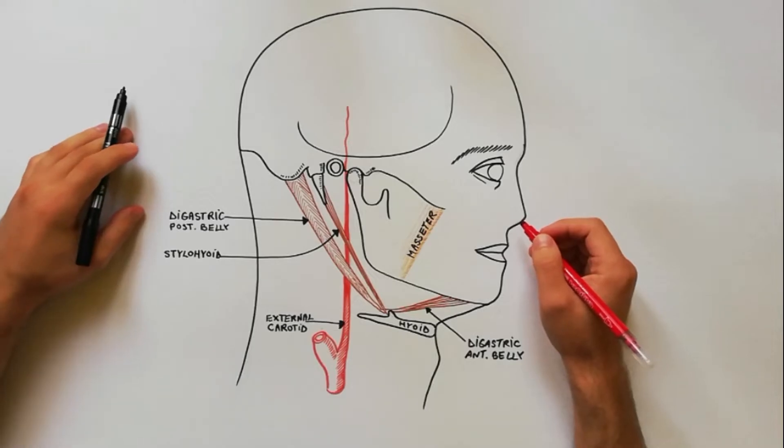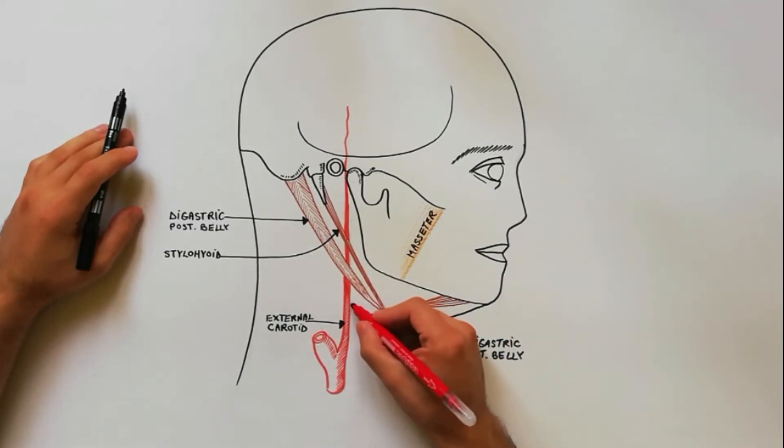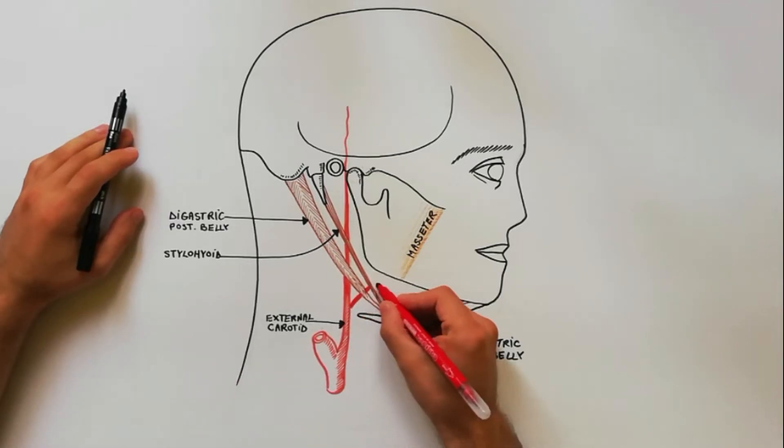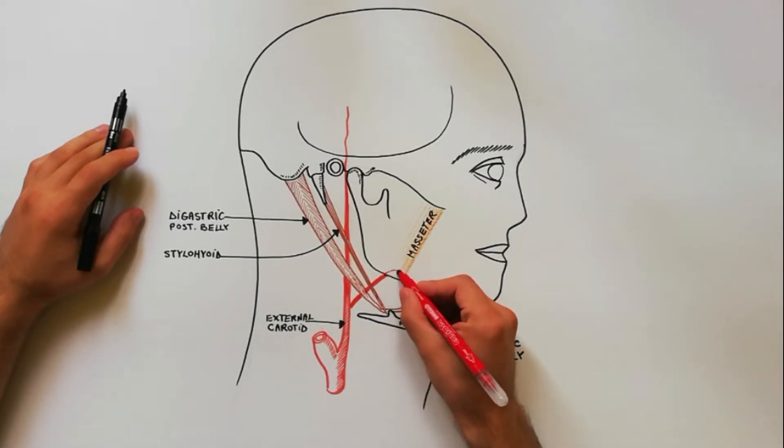The facial artery arises in the carotid triangle from the external carotid artery, passes obliquely up beneath the posterior belly of digastric and stylohyoid muscles, over which it arches to enter a groove on the posterior surface of the submandibular gland.